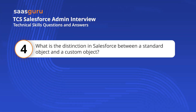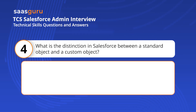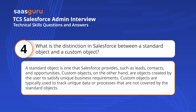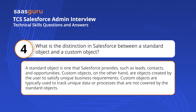What is the distinction in Salesforce between a standard object and a custom object? A standard object is one that Salesforce provides, such as leads, contacts, and opportunities. Custom objects, on the other hand, are objects created by the user to satisfy unique business requirements. Custom objects are typically used to track unique data or processes that are not covered by the standard objects.